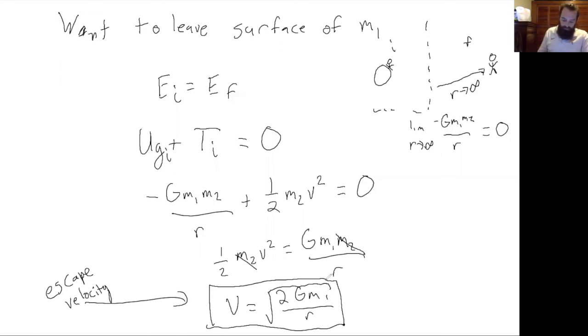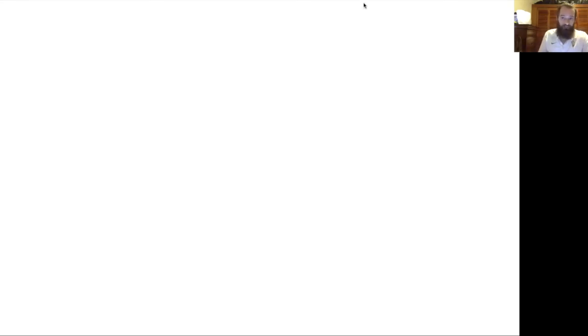In the case of the earth, m1 would be the mass of the earth and r would be the radius of the earth. Now that we've derived the escape velocity, which is v equals square root of 2G, which is the gravitational constant, m, which is whatever mass we're trying to escape, and r, which is the radius of the thing that we're trying to escape or the radius that we are currently away from the center of mass. This escape velocity would work if you were trying to move further away from the planet, but you are already in orbit.